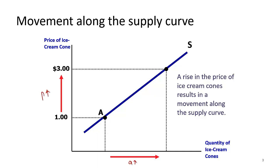Price increases, and this movement from point A to point C — you're moving along the supply curve, and that's why it's called movement along the supply curve. It happens because there's a change in price, and as a result there's a change in quantity. Price increases, which leads to an increase in quantity. This is called movement along the supply curve.